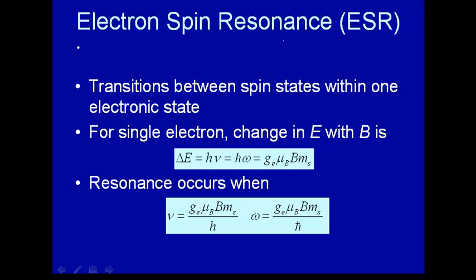Recall that electrons have a spin, and when placed in a magnetic field, these spins that are normally degenerate in energy are split, and one can then look at spectroscopy — transitions between the individual spin states. That's for electrons. We'll also talk about nuclear spin states; everything we say about one is true about the other, more or less.